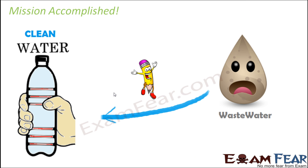So now we have reached towards the end of the sewage treatment plant, or wastewater treatment plant. We could successfully convert wastewater into clean water. We started off with wastewater which contained organic impurities, inorganic impurities, and parasites. But by the end of the entire process — preliminary treatment, primary, secondary, and tertiary — we now have clean water.